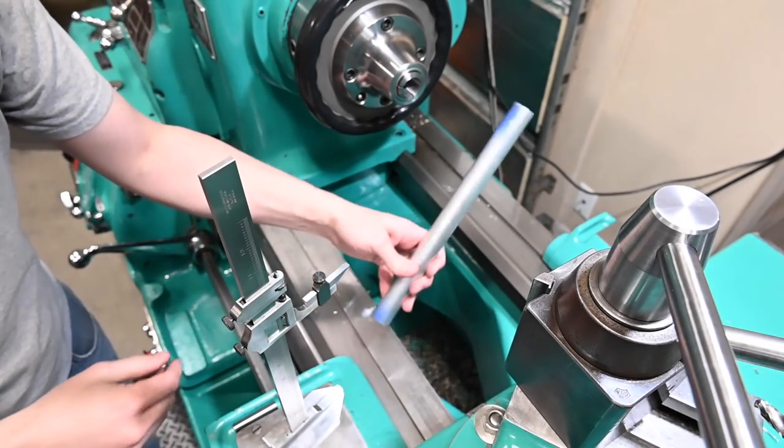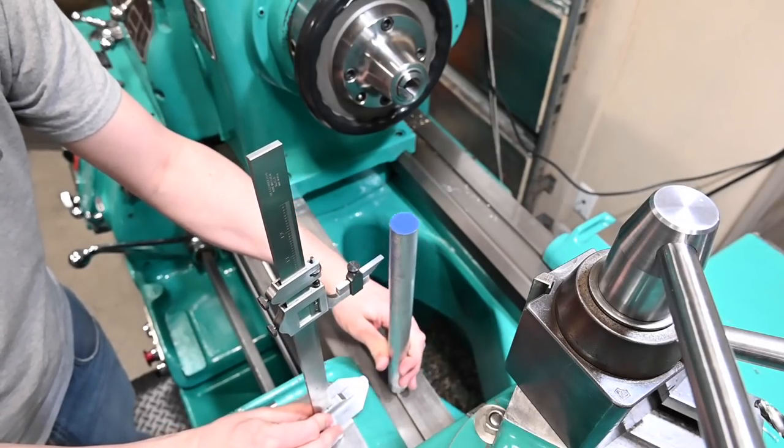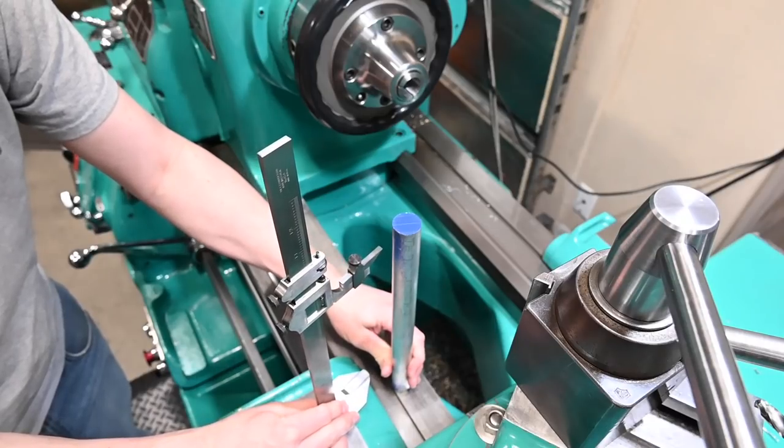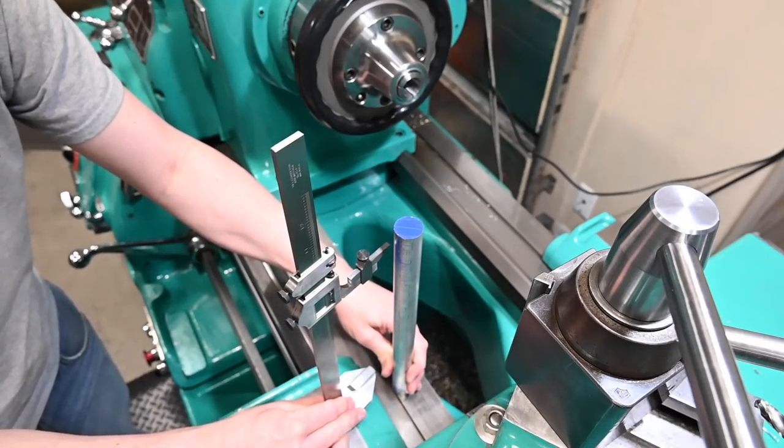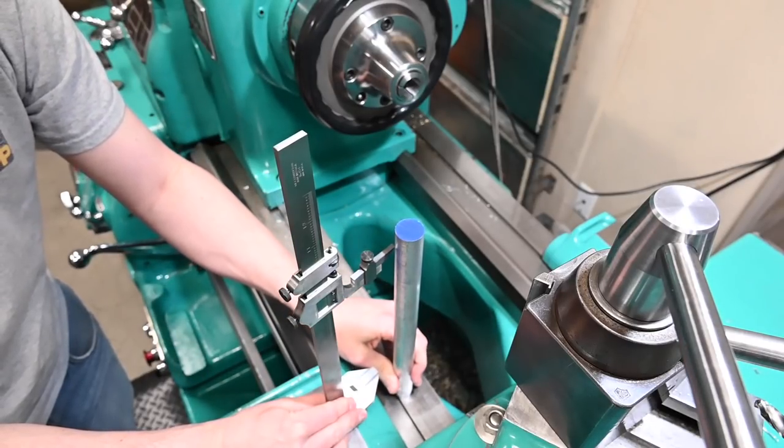In the spirit of keeping things super simple, I think what we'll do is just scribe this piece of material with my height gauge, and then we'll sneak up on that line.